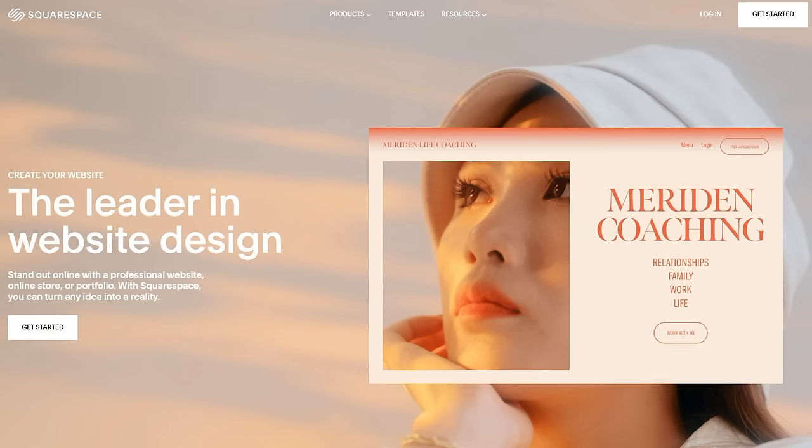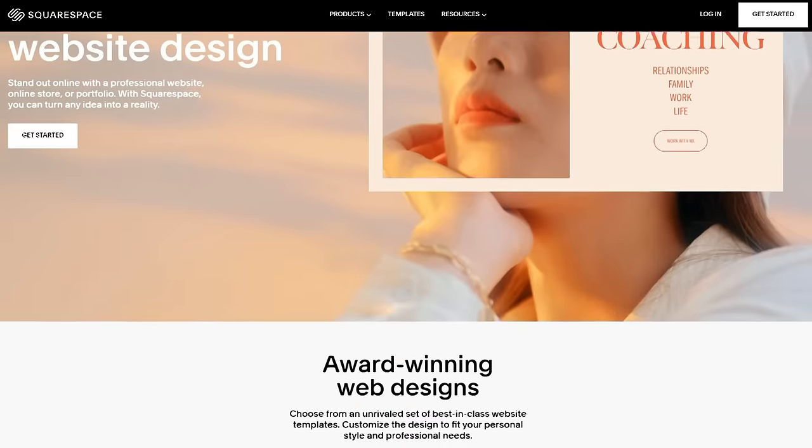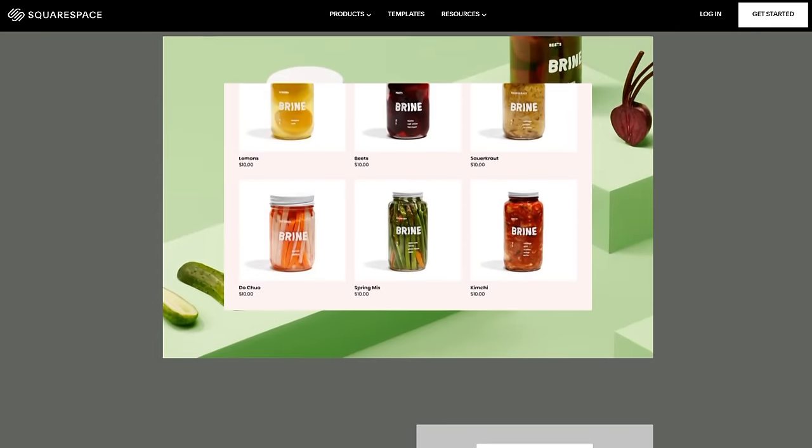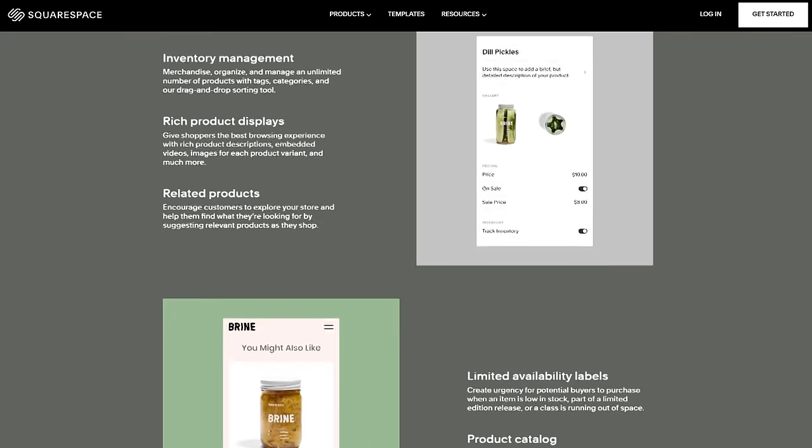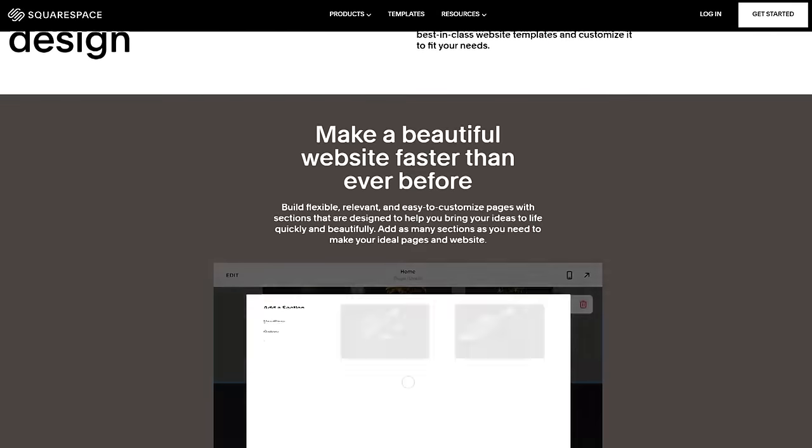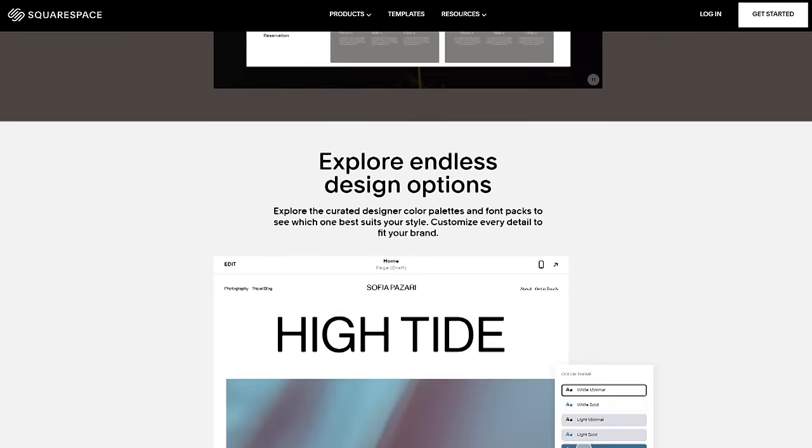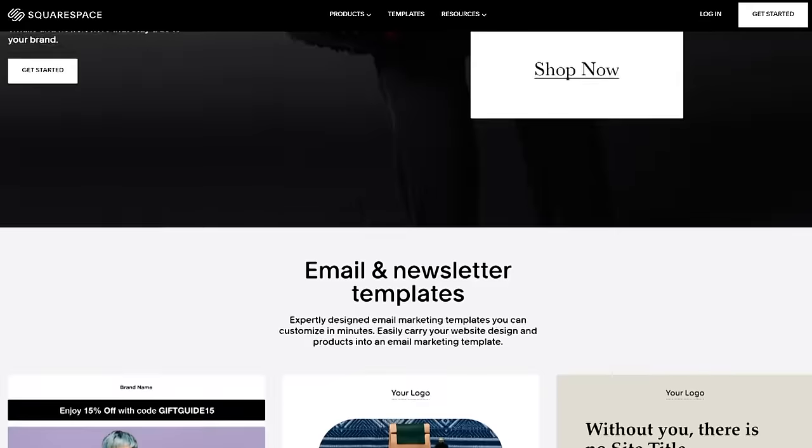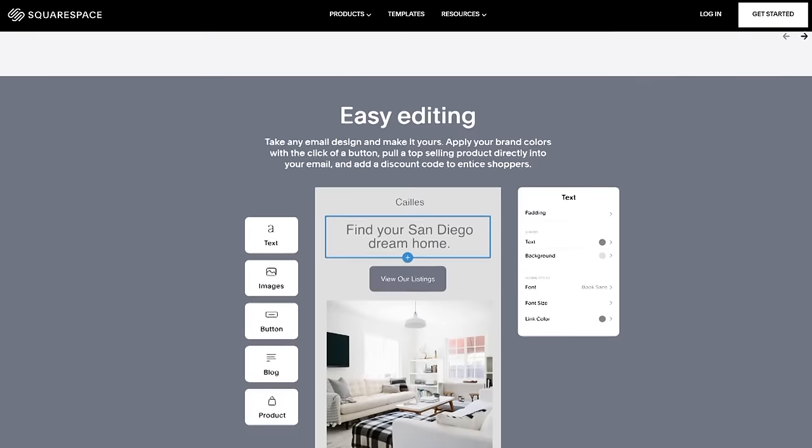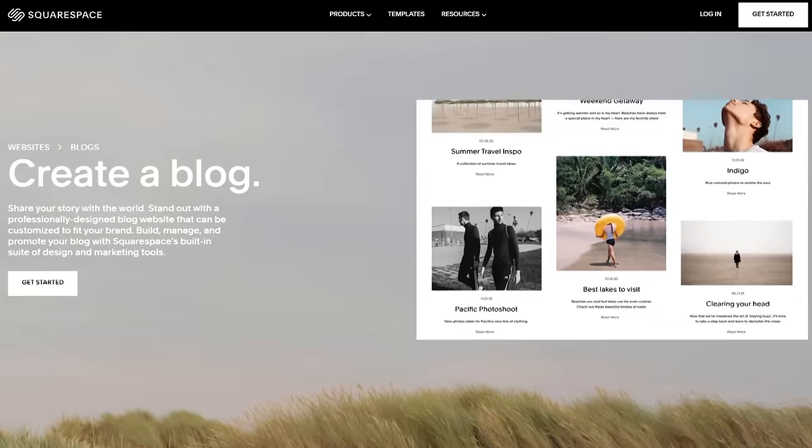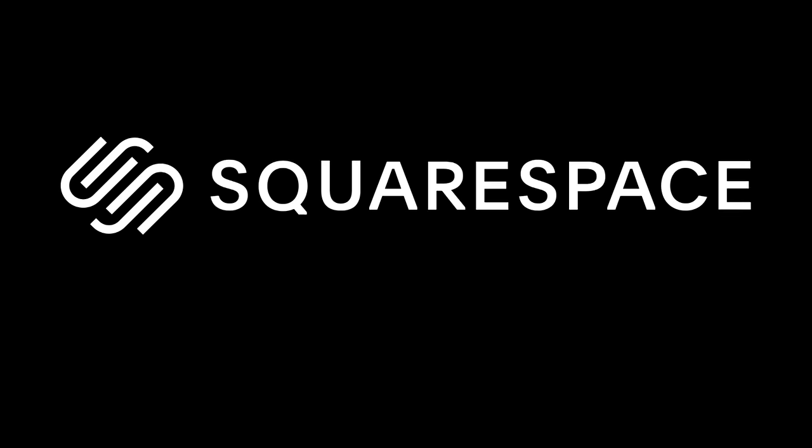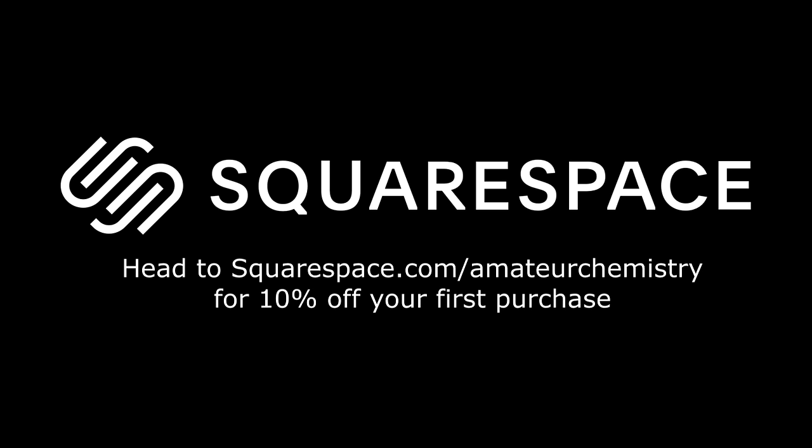Squarespace is an all-in-one advanced website building platform, made to allow entrepreneurs to stand out and succeed online. Squarespace allows you to easily create beautiful websites, whether you're just starting out or managing a growing brand, and use them to engage your audience and sell anything from products to your time. Squarespace offers a variety of incredibly useful features, like their flexible website templates, email campaigns, and blogging tools. For a free trial, head to squarespace.com, and when you're ready to launch, go to squarespace.com/amateurchemistry to save 10% off your first purchase.